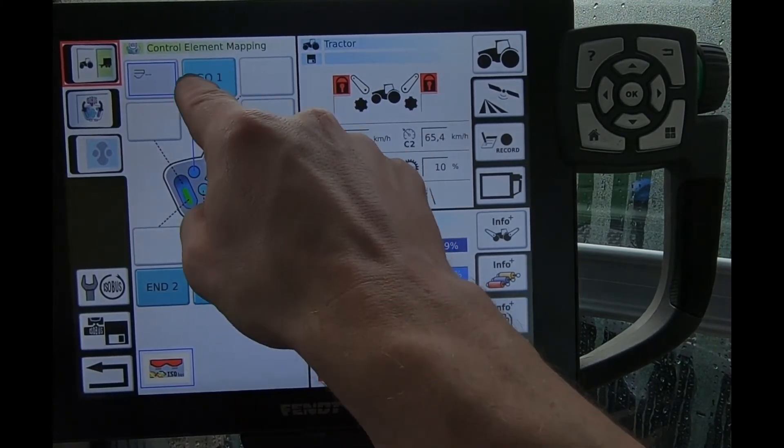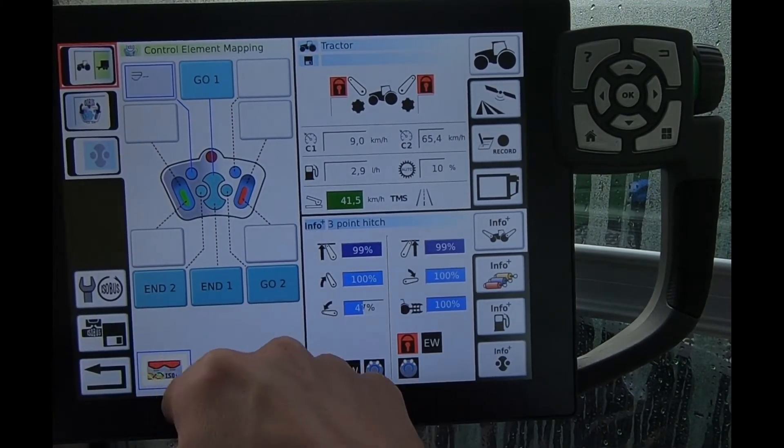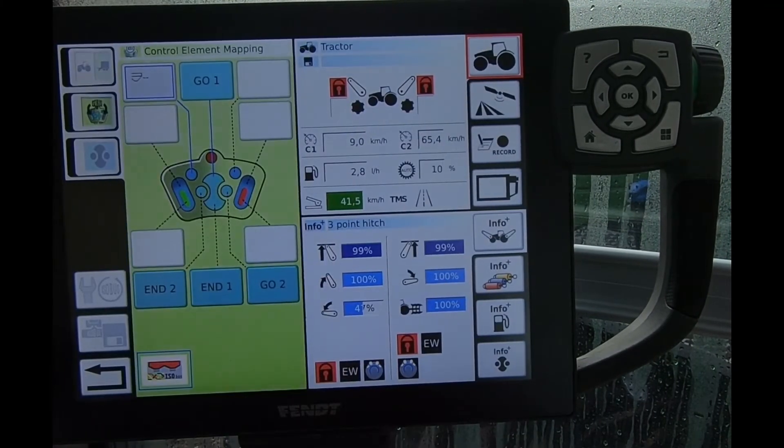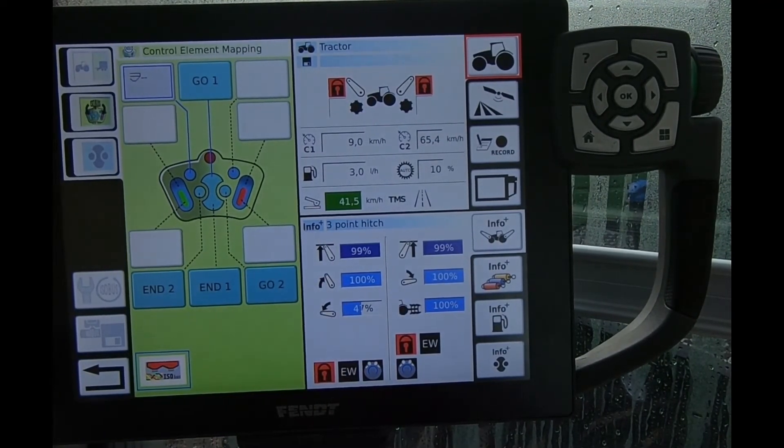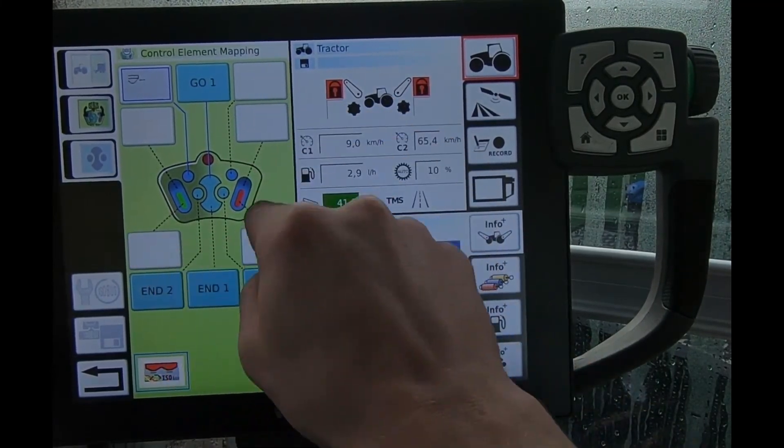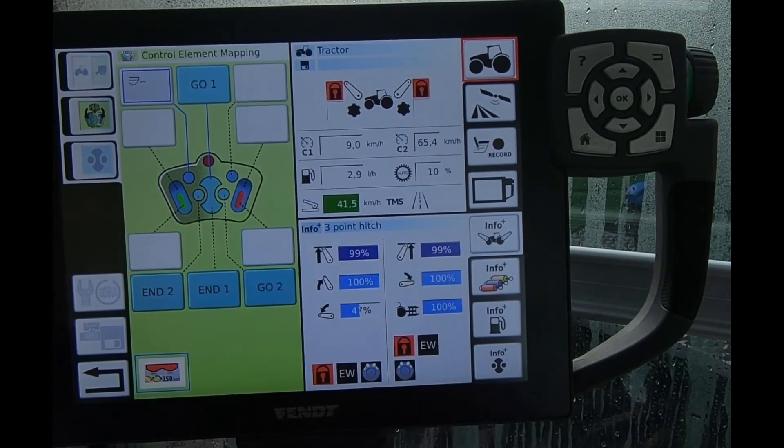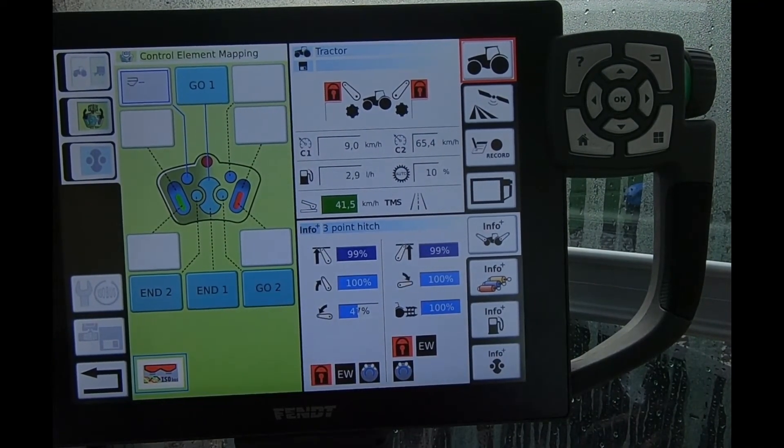Now when I toggled it across to the ISOBUS implement, see here now we've got go one, end one, end two, go to there. And so when then I go to bring it up for my ISOBUS control, I can now only assign it to these ones here.